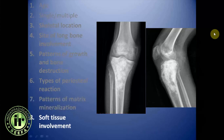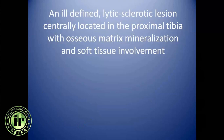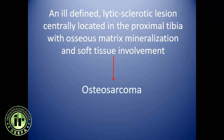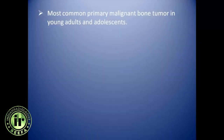The lesion has soft tissue involvement. This is a case of an ill-defined lytic-sclerotic lesion centrally located in the proximal tibia with osseous matrix mineralization and soft tissue involvement. This is the case of osteosarcoma, specifically conventional osteosarcoma.